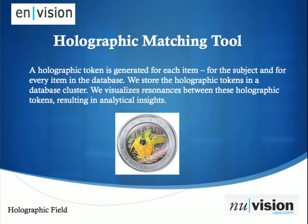So how does a holographic matching tool work? A holographic token is generated for each item — for the subject and for every item in the database. We store the holographic token in a database cluster, and we visualize resonances between these holographic tokens, resulting in analytical insights. We create a hologram for the person and for every item in the database, whether it be an herb, an acupuncture point, or an affirmation. For those who may have seen the system, you can see patterns that develop, and that's where we're able to get to the underlying cause and best solution as quickly as possible.